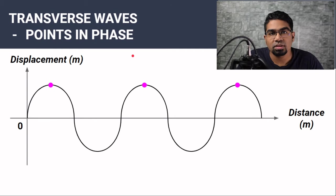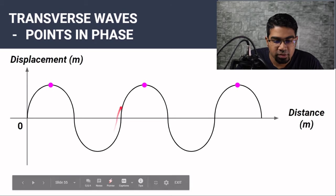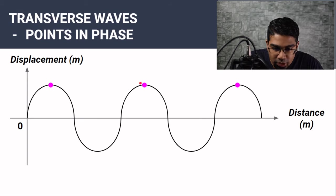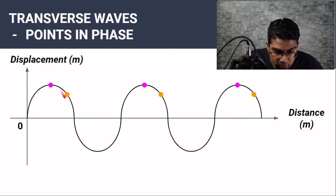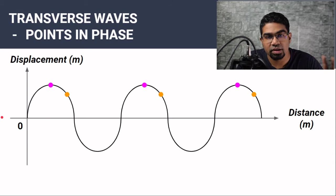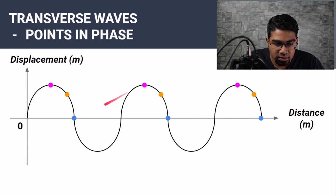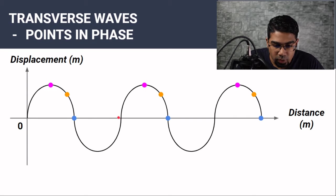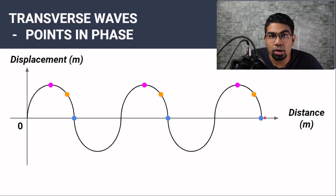Points in phase are points that are at exactly the same phase in the motion of the wave. For example, all the crest points are in phase because they are all at the maximum point of a wave. The same goes for the trough points. For equilibrium points, we need to be careful — two adjacent equilibrium points are not in phase because at one the particle is moving downwards, while at the other it is moving upwards. So when looking at equilibrium positions, we skip one for them to be in phase. The three easily identifiable sets of points in phase are: points on the crests, points at the troughs, and every other equilibrium position.